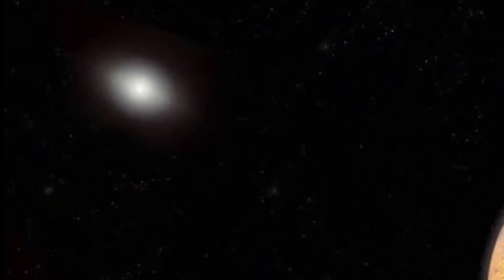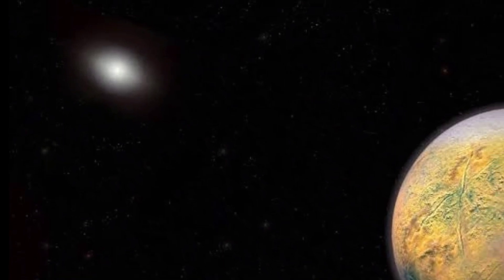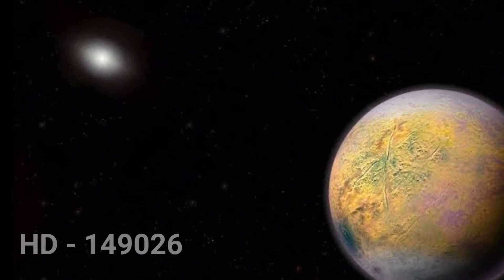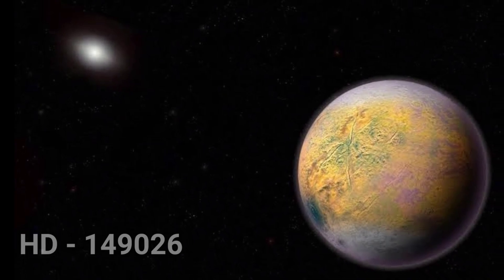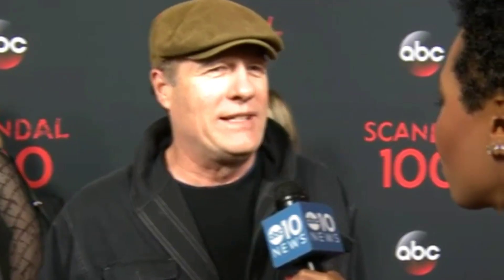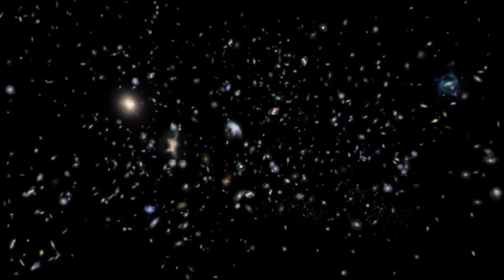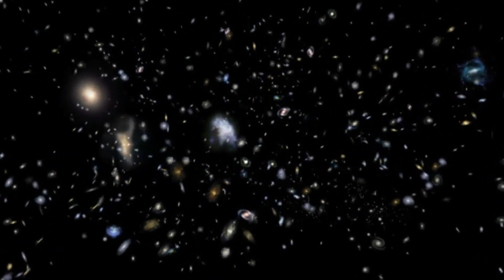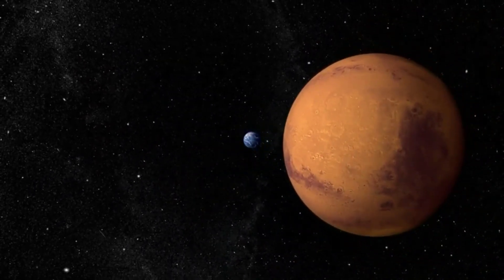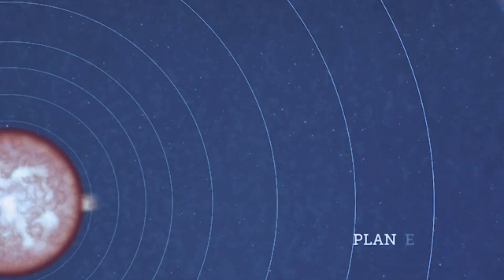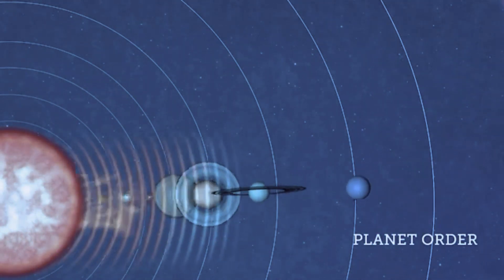According to NASA, core accretion indicates that small, rocky worlds should be more frequent than larger gas giants. A huge planet with a big core discovered in 2005, circling the sun-like star HD 149026, is an example of an exoplanet that helped bolster the argument for core accretion. Astronomer Greg Henry of Tennessee State University in Nashville stated this was a validation of the core accretion hypothesis. The CHEOPS satellite, set to launch in 2017, will navigate exoplanets ranging in size from super-Earths to Neptune to study how planets evolved.